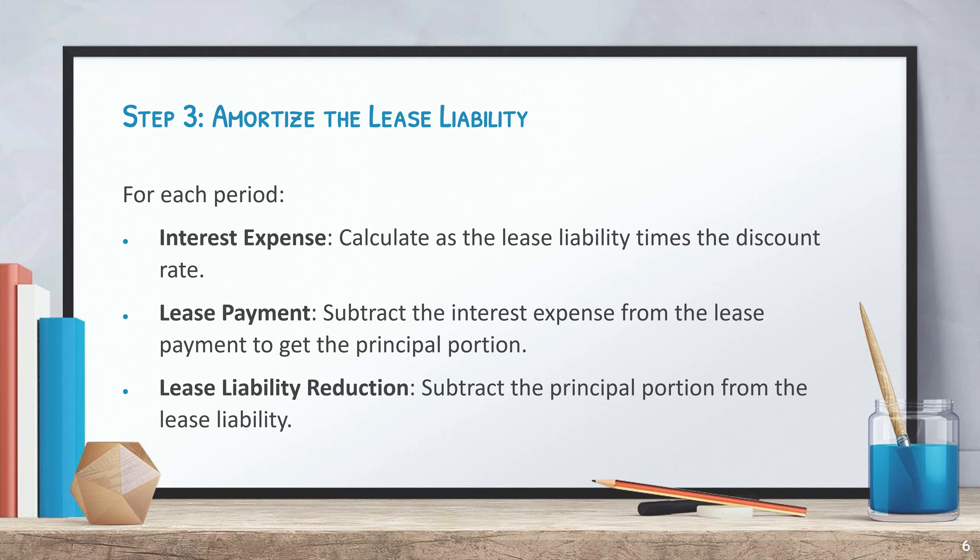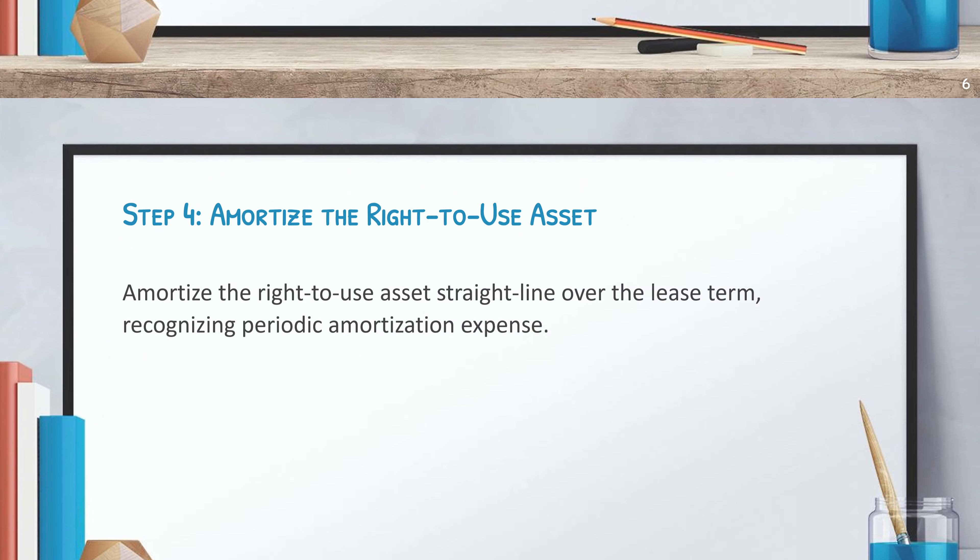Step three: amortize the lease liability. For each period, calculate interest expense as the lease liability times the discount rate. Then subtract the interest expense from the lease payment to get the principal portion. Finally, reduce the lease liability by subtracting the principal portion from the outstanding lease liability.